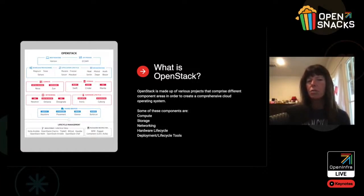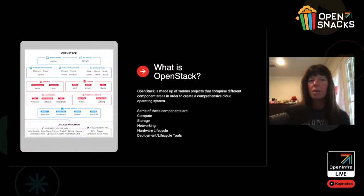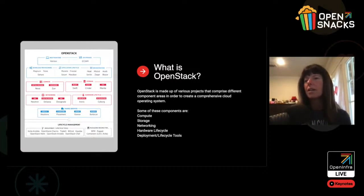Networking is Neutron, but it also contains Octavia for load balancing and Designate for DNS. We've got Hardware Lifecycle with Ironic for bare metal and Cyborg. And then we have various deployment lifecycle tools that you can use to deploy your clouds and maintain them.